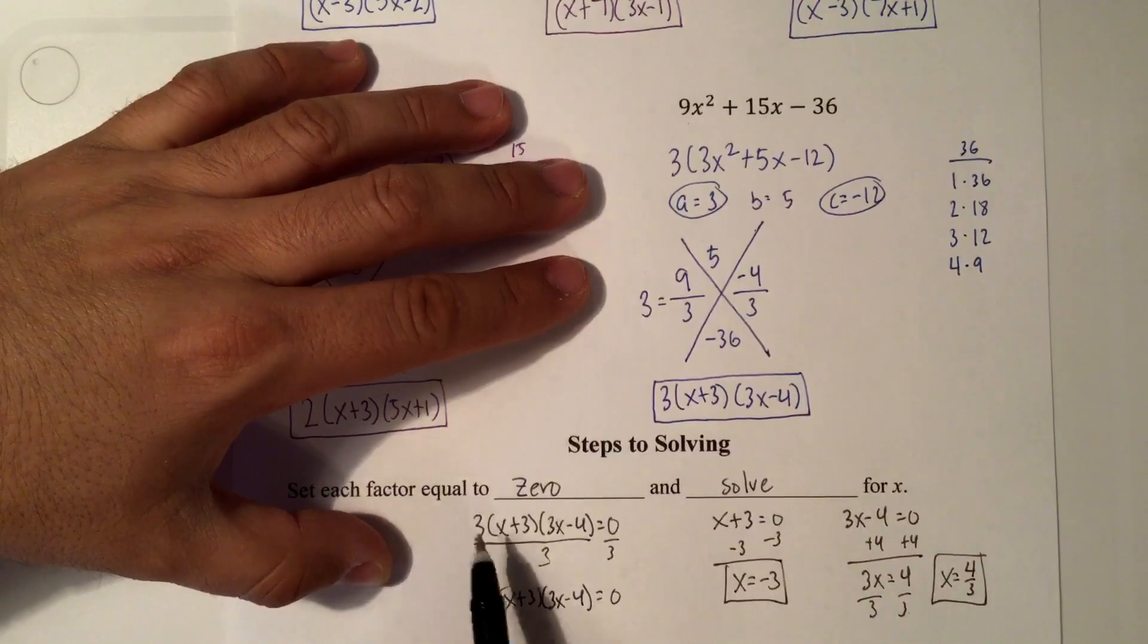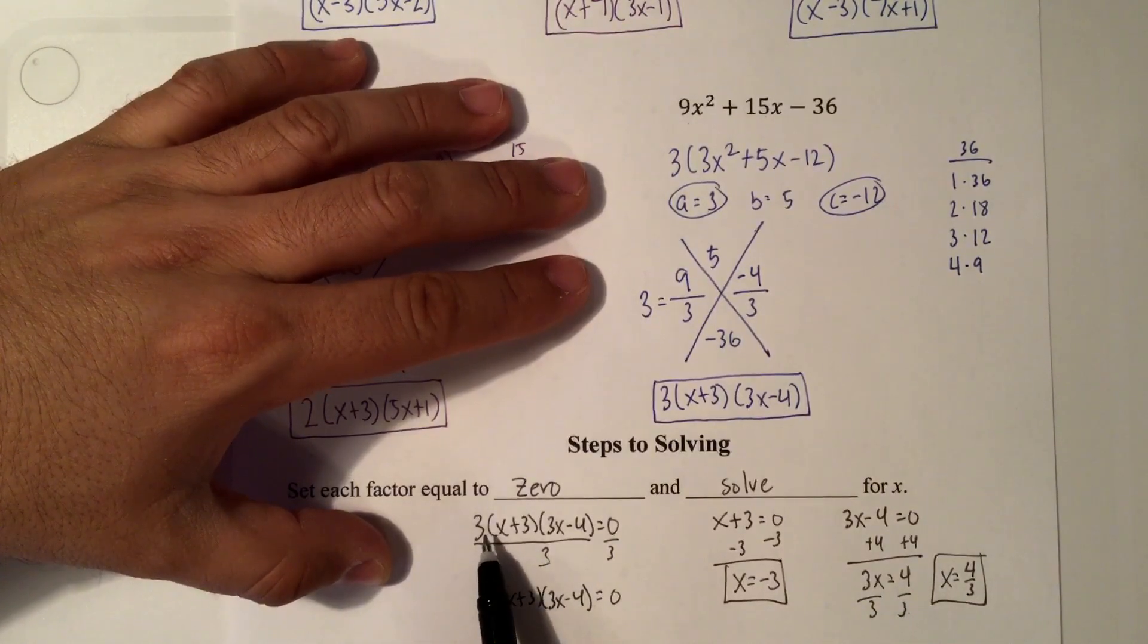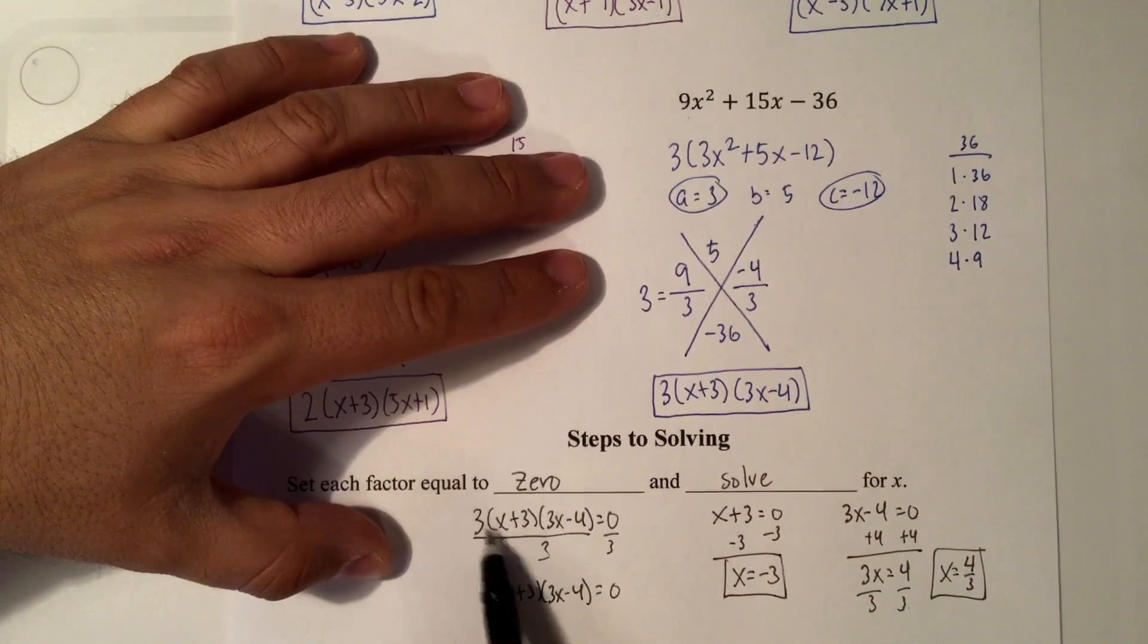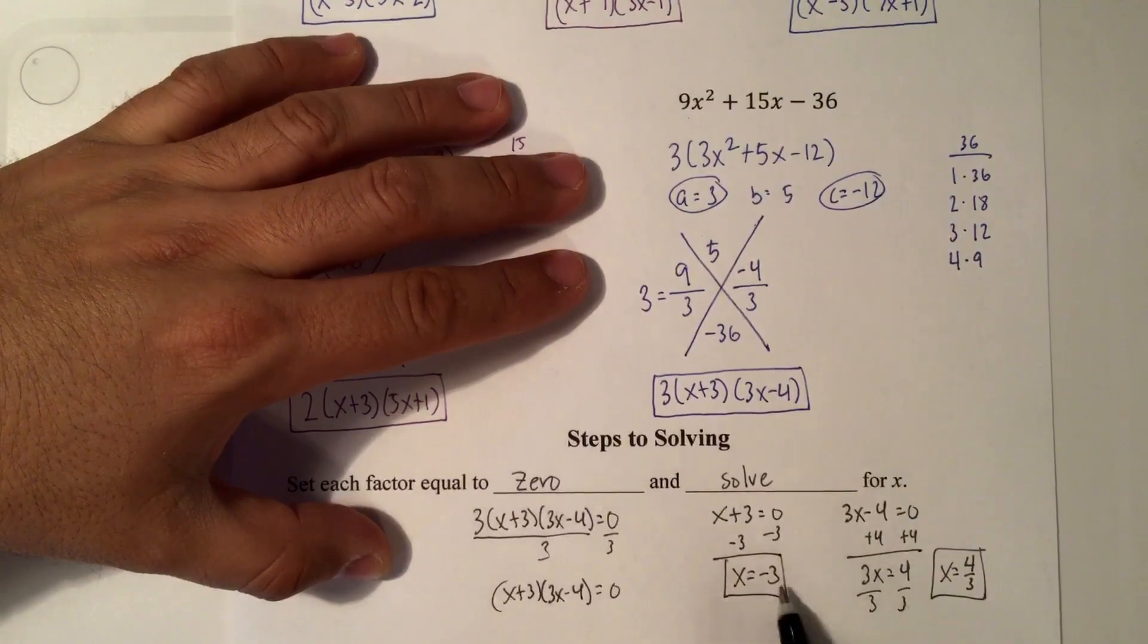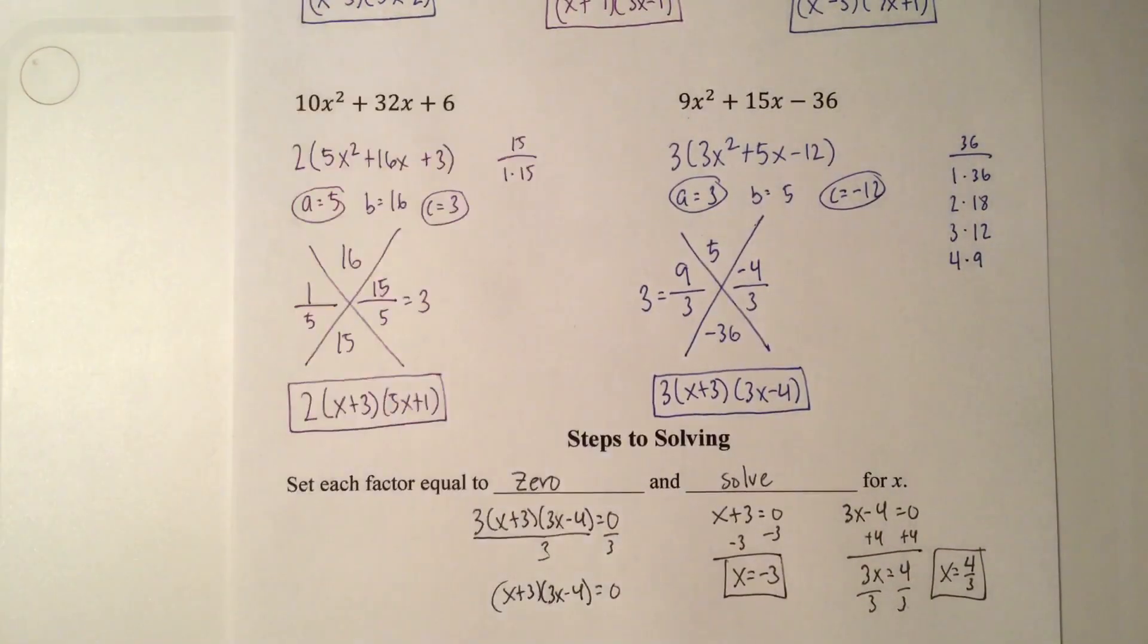So that's how you get your solutions. Now for this one, if this happened to have an x, then we would have another solution. But since it does not, there is no variable there. So we can't set it equal to 0. And those are my two solutions.